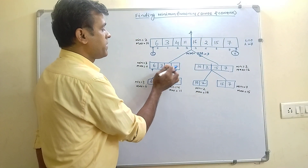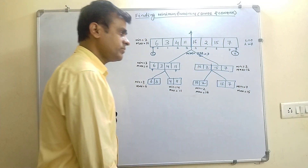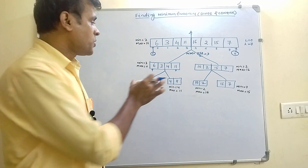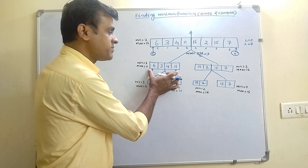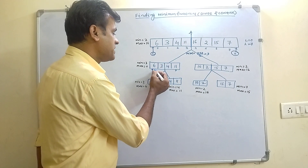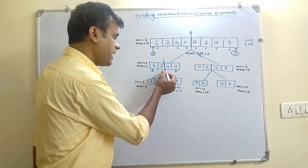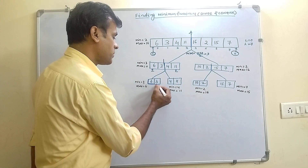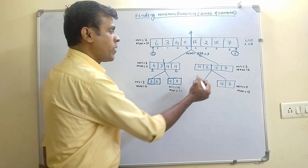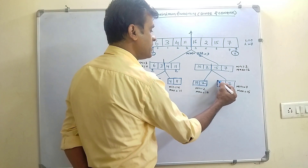One part is 6, 3, 4, and 11; another one is 16, 2, 15, and 7. I checked whether my problem is bigger or smaller, and I feel it is still bigger, so I want to solve it using divide and conquer again. I take the low and high of each subarray, find the mid, and divide each into 2 subarrays: 6 and 3 on the left, 4 and 11 on the right; and 16 and 2 on the left, 15 and 7 on the right.